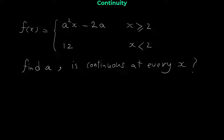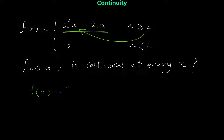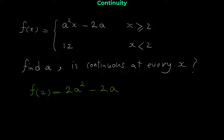So we have to check the continuity of this function at point x = 2, using the definition of continuity. First, we find f(2). Since x = 2 satisfies x ≥ 2, we plug 2 into the first equation: f(2) = 2a² - 2a. The function is defined at point 2.